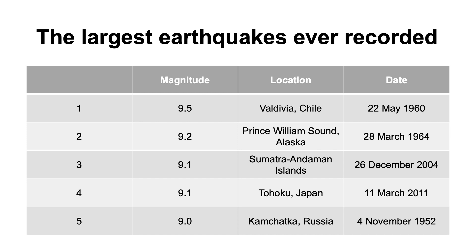We've already mentioned that the Great Chilean earthquake was the largest earthquake ever recorded. Other very large earthquakes include the Great Alaskan earthquake of 1964, the Sumatran earthquake of 2004, the Japanese earthquake in 2011, and the Kamchatka earthquake of 1952. All of these earthquakes registered magnitude 9 or more on the Richter scale. However, geological evidence indicates that much, much larger earthquakes have taken place in the Earth's past, especially in association with the catastrophic events of Noah's flood.